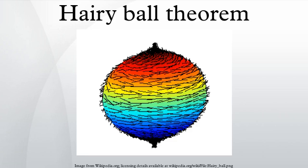For the ordinary sphere, or 2-sphere, if f is a continuous function that assigns a vector in R³ to every point p on a sphere such that f is always tangent to the sphere at p,